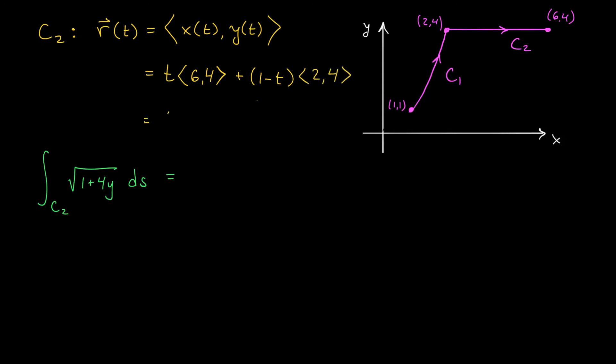When parametrizing in this way, you always take t between 0 and 1. You can see that when t is 0, we really are going to get our initial point (2,4), and when t is 1, we really are going to get our terminal point (6,4). Again, this only works for straight line segments.